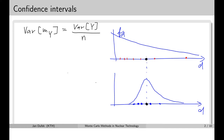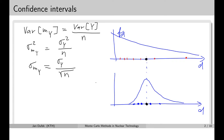We can rewrite this result for the standard deviation as well. Since the variance is the square of the standard deviation, we can write that the standard deviation of the mean value equals the standard deviation of the result divided by the square root of the number of samples. So the standard deviation of the mean value is inversely proportional to the square root of the number of samples collected during the whole simulation.